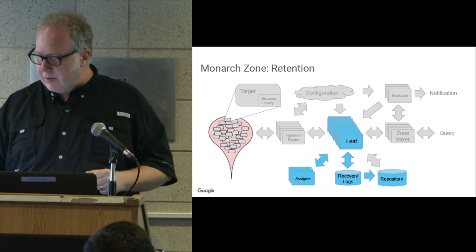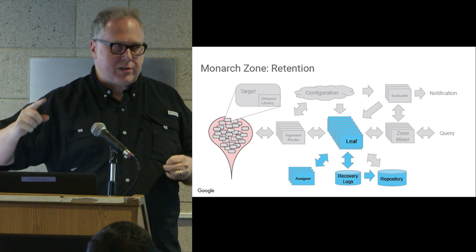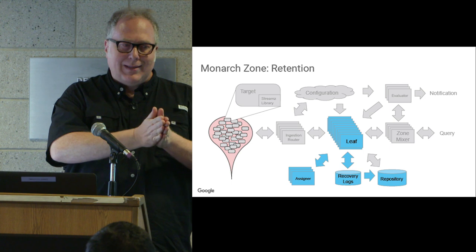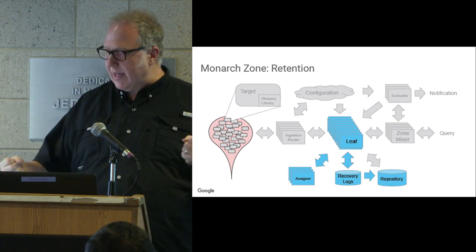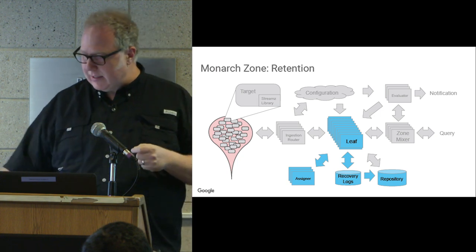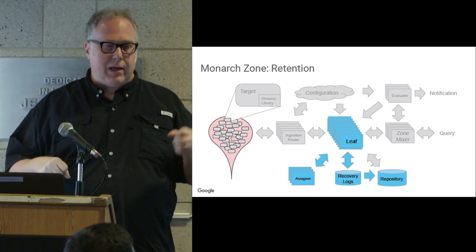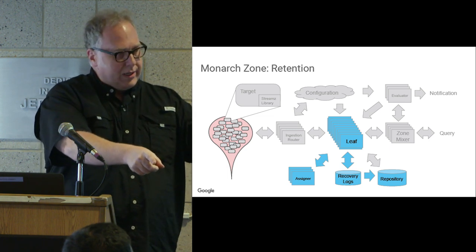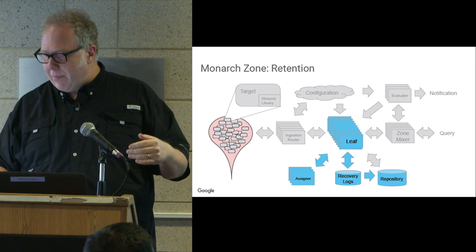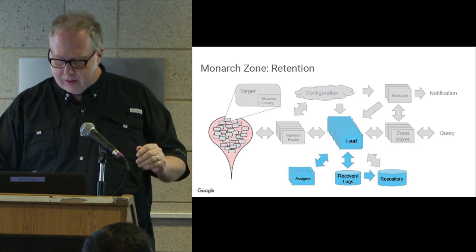The leaves write to recovery logs so that if a leaf crashes, it can read its state and run again. Because we're dividing up our range lexicographically rather than by hash, we need constant load balancing since one part of the key range might get hot. That's the assigner task. It uses the recovery logs to move ranges around seamlessly: you can say you're recording this measurement, start recording it on another leaf, read the history, history is read, then stop recording it on the first — moving load from one to another. It also provides a path to our historical repository where you can save data for longer periods.